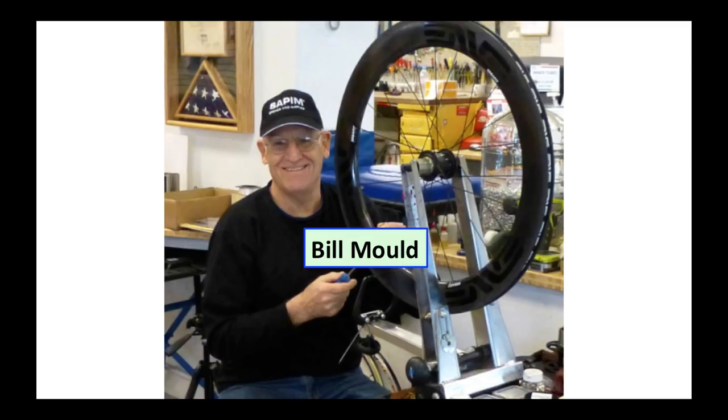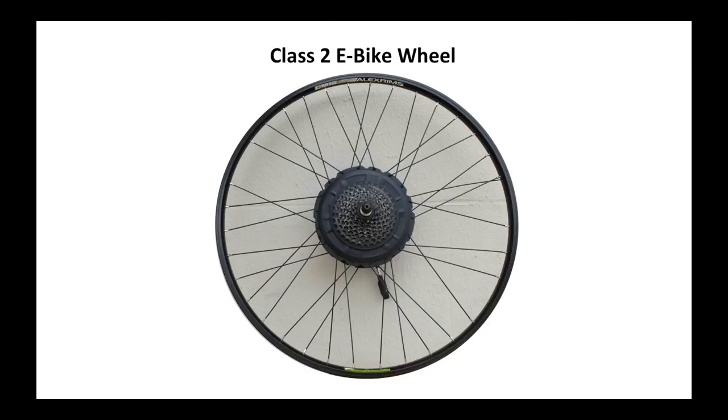Hi, my name is Bill Mould and I use a deep knowledge of physics and mechanical engineering to design and build bicycle wheels. We're going to do a study on this Class 2 e-bike wheel, meaning it is on a bicycle that has a throttle instead of pedal assist.